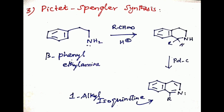Third method: Pictet-Spengler synthesis. This reaction involves the condensation between beta-arylethylamine and an aldehyde in the presence of excess hydrochloric acid at 100 degrees Celsius. We get 1,2,3,4-tetrahydroisoquinoline. After that, this product dehydrogenates by palladium with carbon to give 1-alkyl isoquinoline.